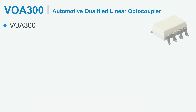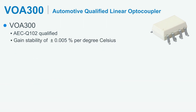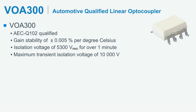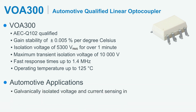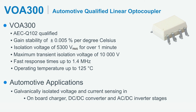In a nutshell, the VOA300 is an AEC-Q102 qualified automotive linear optocoupler with a gain stability of ±0.005% per degree Celsius, isolation voltage of 5,300 V RMS, and maximum transient isolation voltage of 10,000 V. The VOA300 allows fast data transfer at 1.4 MHz, which is the fastest in the market, and can operate at temperatures up to 125°C. It can be applied for galvanically isolated voltage and current sensing in onboard chargers, DC-DC converters, AC-DC inverter stages, and is also well suited for isolated temperature sensing.